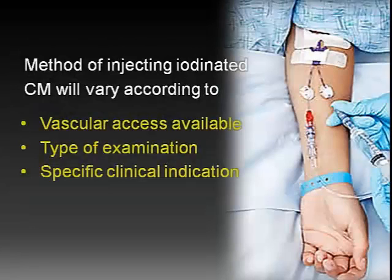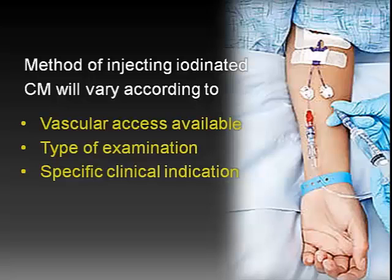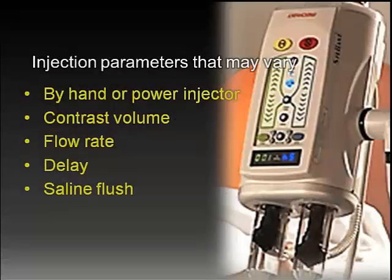Once the decision has been made to use intravenous iodinated contrast media for a particular examination, the method of injecting iodinated contrast media will vary depending on vascular access, the type of examination, and the specific clinical indications. These factors will determine whether the injection will be performed by hand or with a mechanical or power injector. They will also influence the contrast volume used, the flow rate at which the contrast will be injected, the delay between injection and scanning, and whether a saline flush is beneficial.